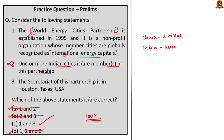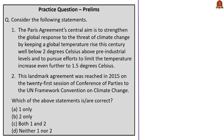The third statement: the secretariat of this partnership is in Houston, Texas, United States — correct. Houston is called the energy capital of America. Only the first and third statements are correct, confirming the answer is option C.